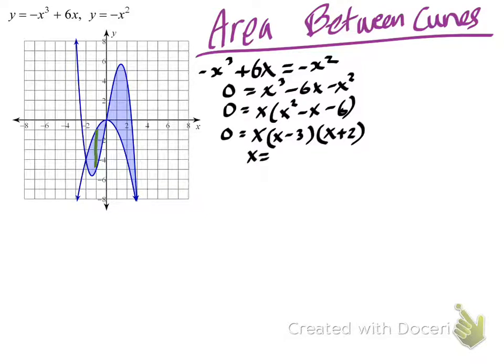In descending order that's x² - x - 6, which factors as (x - 3)(x + 2). So our points of intersection are 0, 3, and -2.